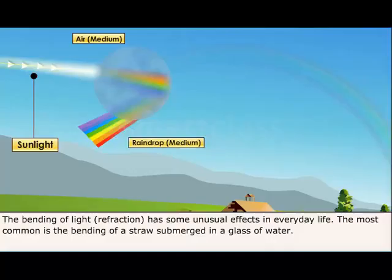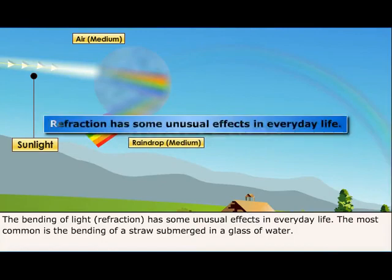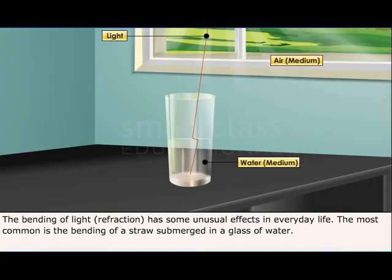The bending of light, or refraction, has some unusual effects in everyday life. The most common is the bending of a straw submerged in a glass of water. Let's check a few other effects of refraction.